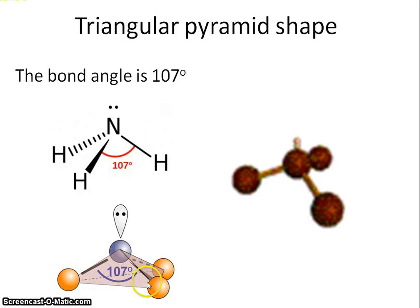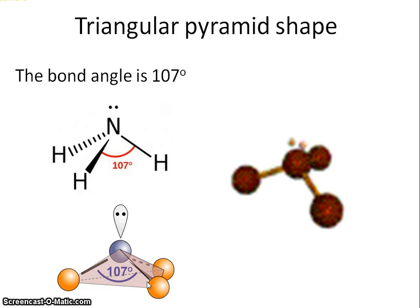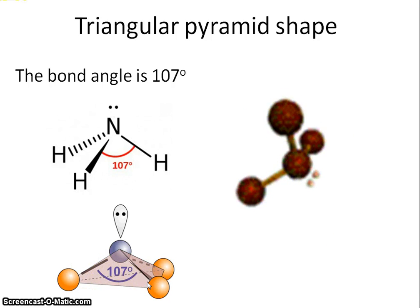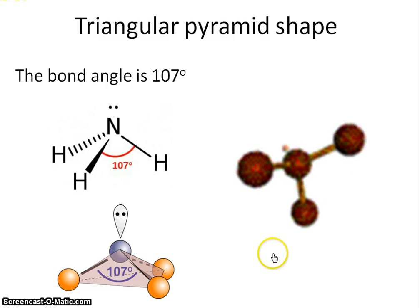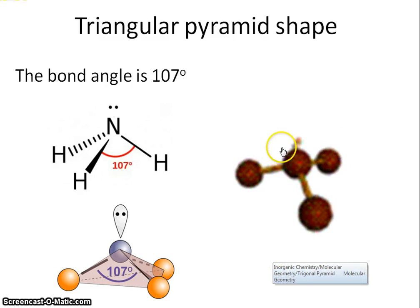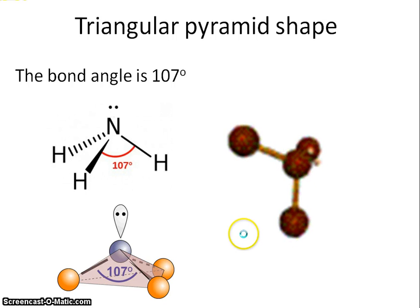The bond angle is 107 degrees. Note that the lone pair doesn't take part in determining the shape of the molecule.